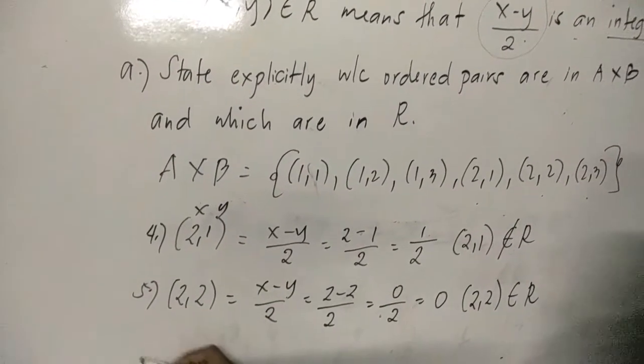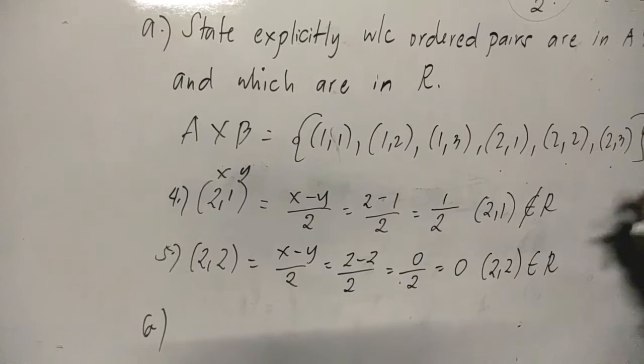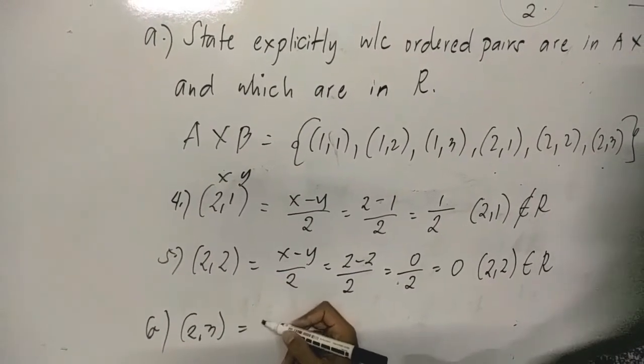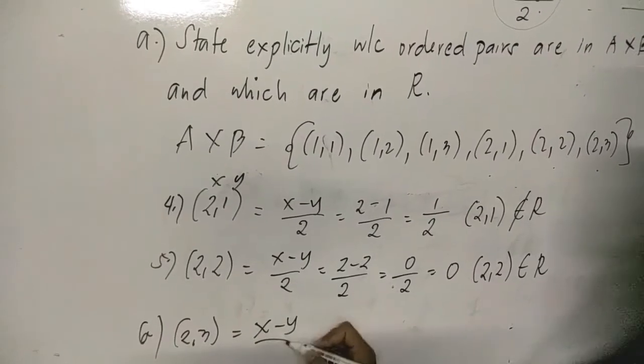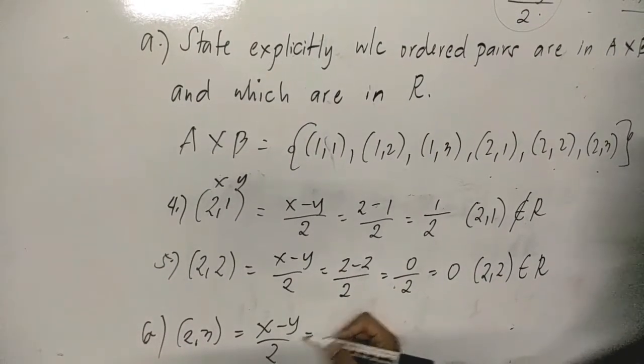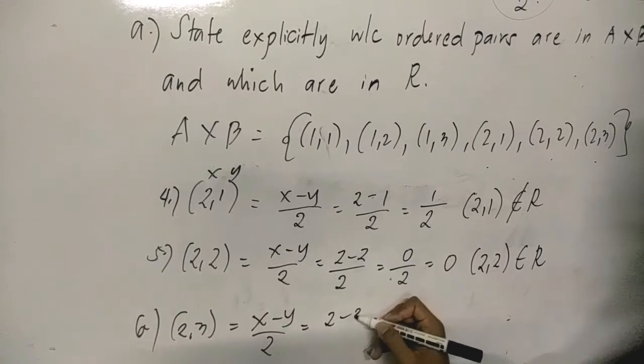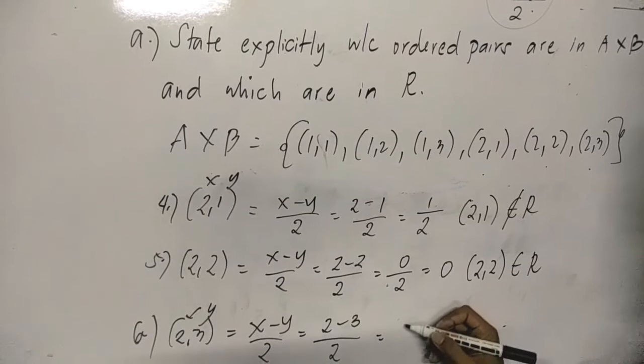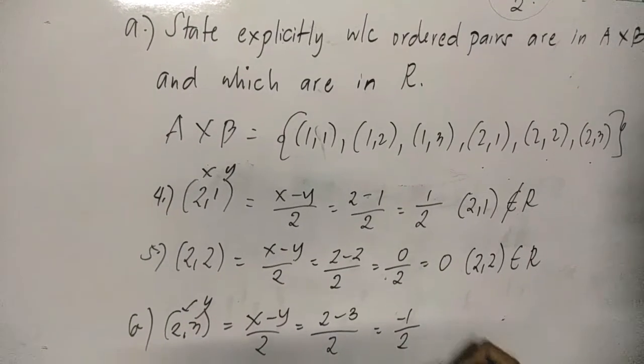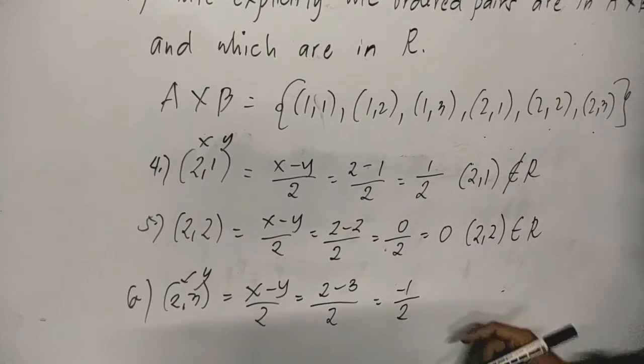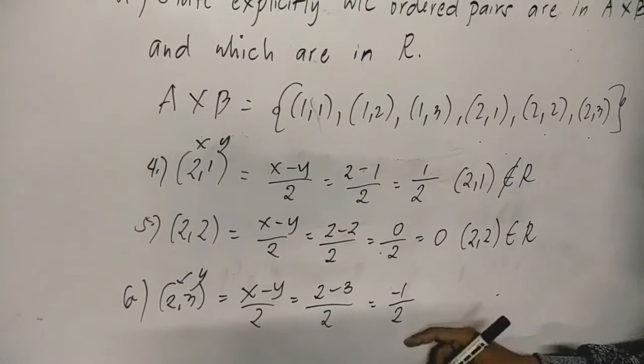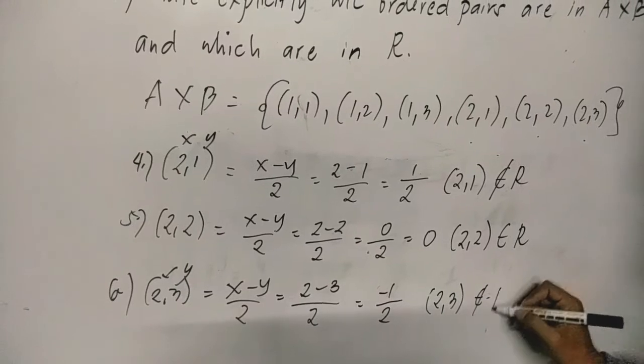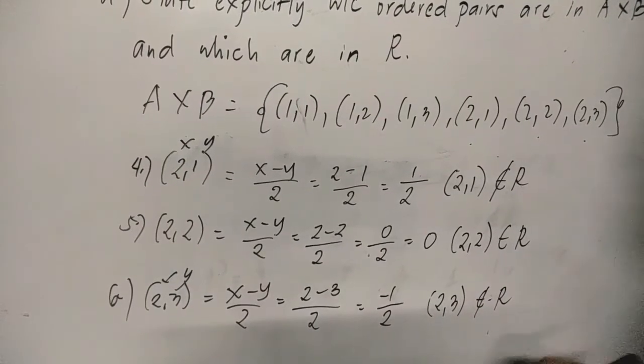The last one: (2,3). Substituting: (2 - 3)/2 = -1/2. So negative 1 half. Therefore this is not an integer. So (2,3) is not related. That's it.